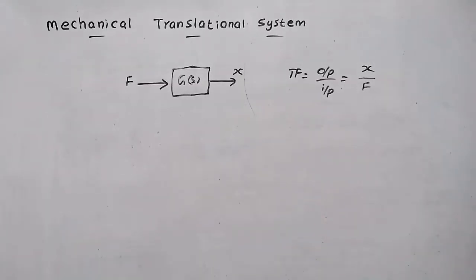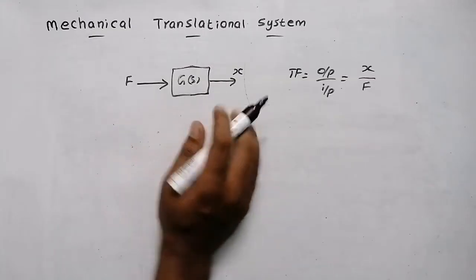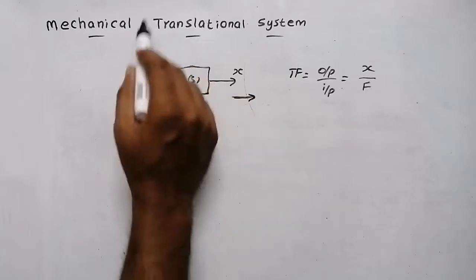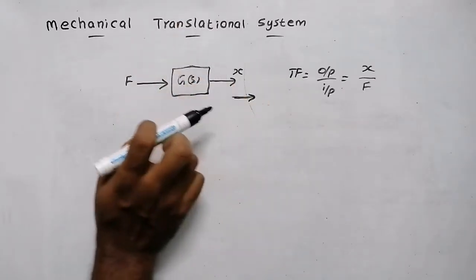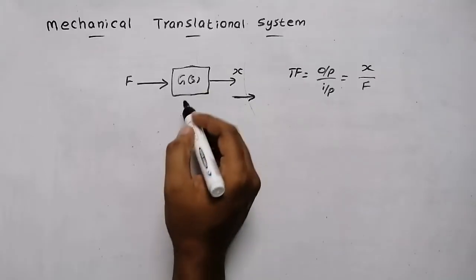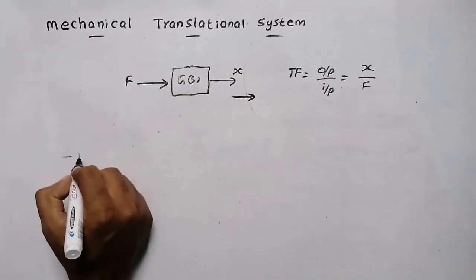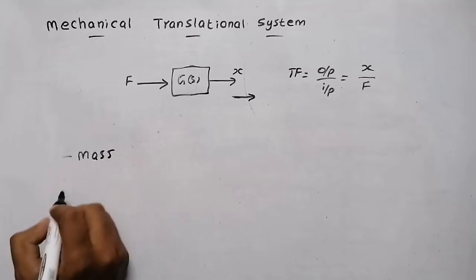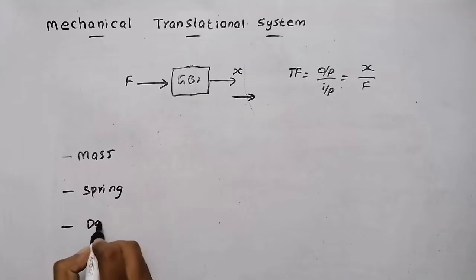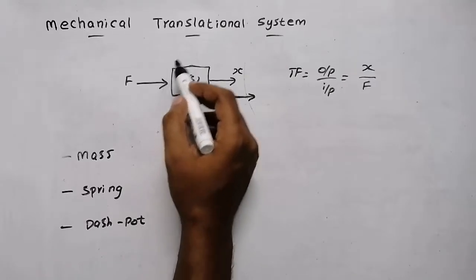What do we mean by a translational system? The system will move only in straight lines or linear directions — translational system means the system moves only in straight lines. Now we can model this mechanical system using three elements: the first element is mass, the second element is spring, and the third element is dashpot.